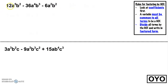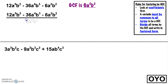Our last example: 12a to the 5th b squared minus 36a to the 4th b cubed minus 6a squared b squared. Look at the coefficients first — the largest number we can pull out of 12, 36, and 6 is 6. The greatest amount of a's we can pull out is a squared. The largest amount of b's is b squared as well. So 6a squared b squared is our GCF. When I divide that out, I end up with 2a cubed minus 6a squared b minus 1. The factored form is 6a squared b squared times 2a cubed minus 6a squared b minus 1.